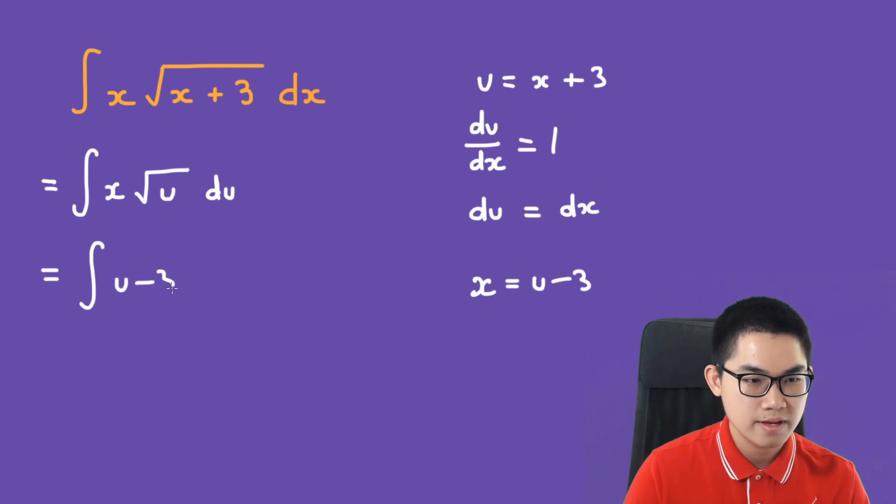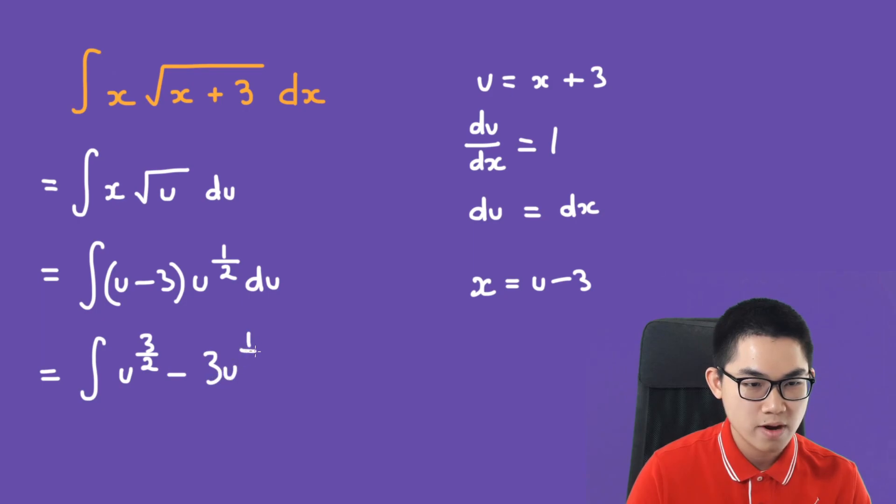We have u minus 3 times u to the power of 1 over 2 du. This is the integral of u to the power of 3 over 2 minus 3 times u to the power of 1 over 2 du.